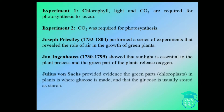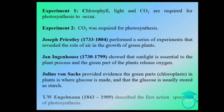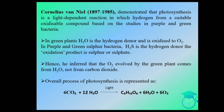Julius von Sachs provided evidence that in green plants, glucose is made in the chloroplast and is usually stored as starch. Engelman described the first action spectrum of photosynthesis.